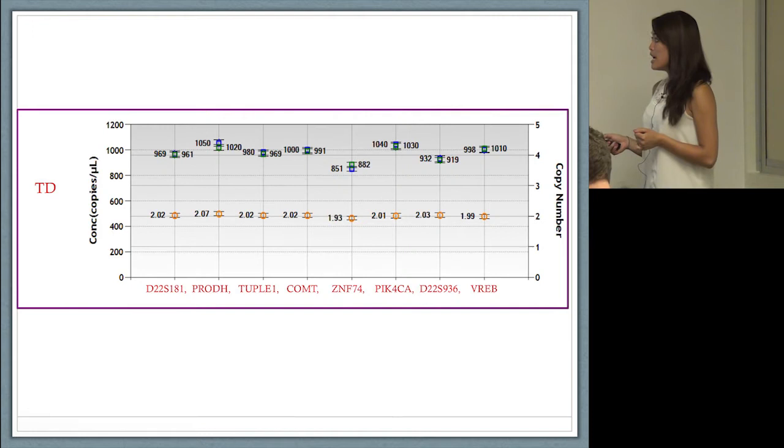Here I'm showing that we were able to determine a TD individual very easily. The green and blue dots represent the concentrations in copies per microliter. The orange represents the copy number values. A TD, a normal individual, should have two copies of all these primers.